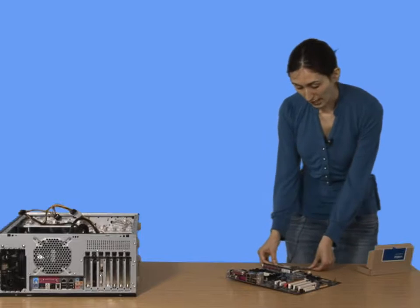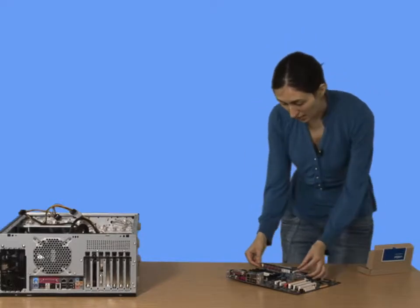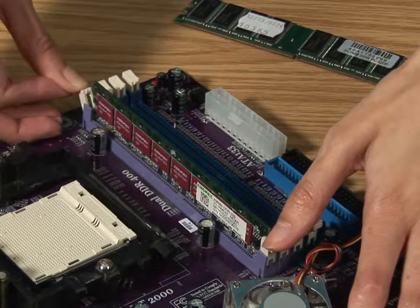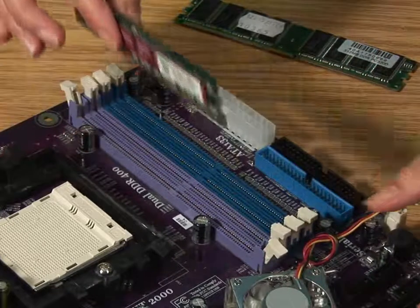So with some RAM upgrades, you'll be removing and discarding your existing RAM. So I'll show you how to get it out. Pull down these little white clips like that and then it just lifts out. It pops and lifts out.